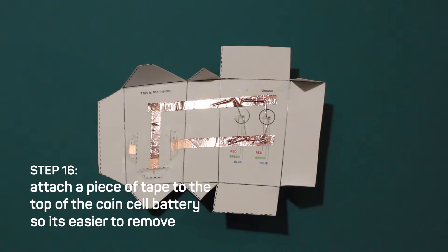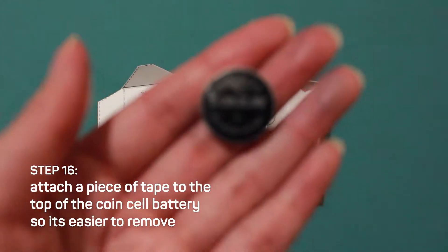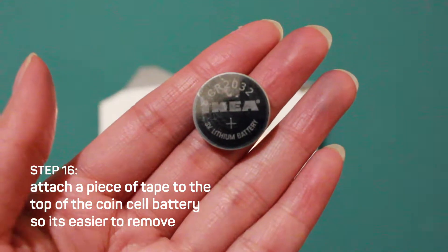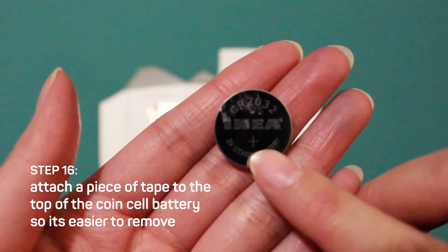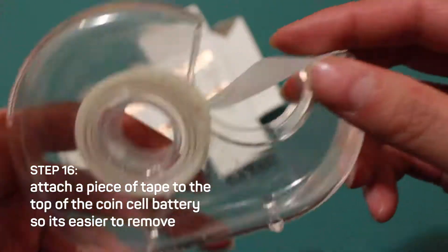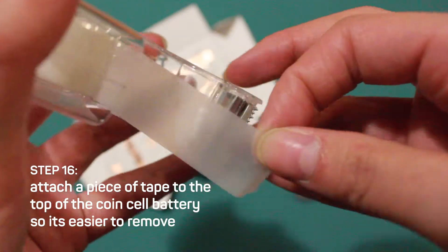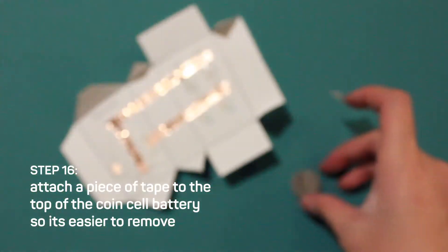Step 16, get your coin cell battery. Your battery has two sides, the positive side here, and the negative side here. Attach a piece of tape to the top of the coin cell battery so it's easier to remove from the battery pocket.